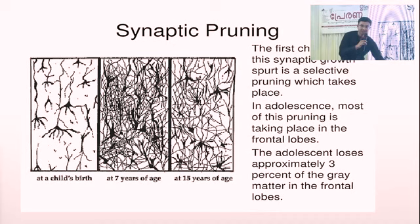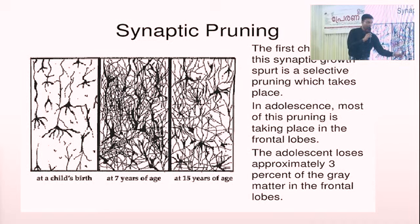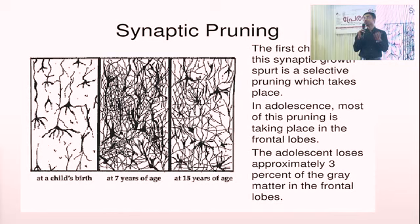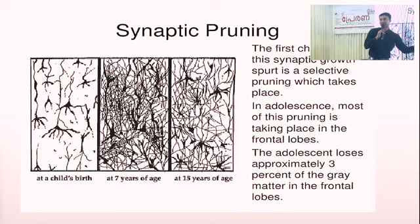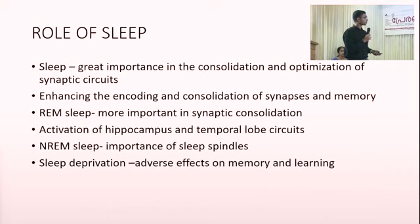At birth the child has a certain number of synapses. By around seven to eight years of age, the child has millions of neurons and synapses. This gets cut down between say 10 and 15 years of age — the ones you use are retained, the ones you don't use are discarded. The final state is attained around 15 to 16 years of age. This pruning is very important.